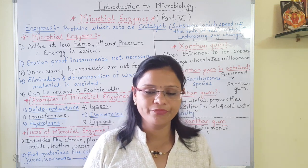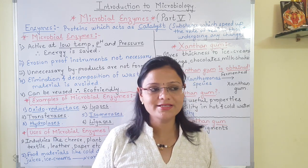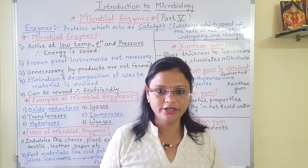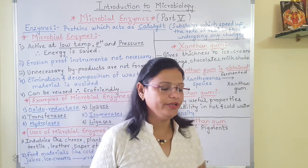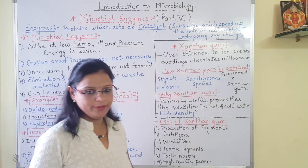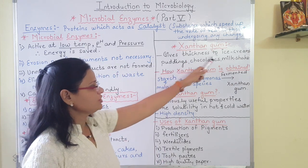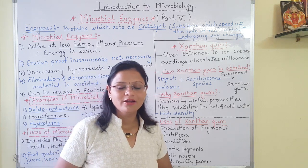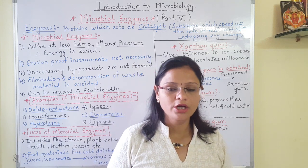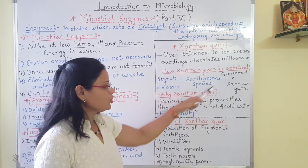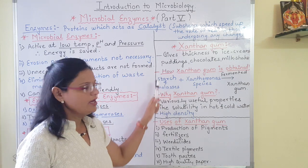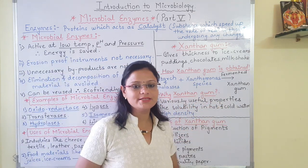Next part is xanthan gum. What is xanthan gum? Xanthan gum is a healthy product which gives thickness to food material, and it is obtained from bacteria. Xanthan gum gives density or thickness to ice creams, puddings, chocolates and milkshakes. Xanthomonas species, a species of bacteria, is mixed with a mixture of starch and molasses, and this mixture is fermented to get the xanthan gum.